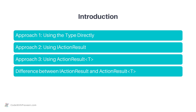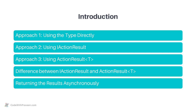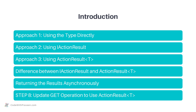We then cover the differences between the usage of IActionResult and ActionResult. Then we move on to understanding how to return the results asynchronously using the async-await mechanism. Finally, as a next step in building the web API, you will update the existing GET operation to use ActionResult. By the end of this section, you will be familiar with the return types of actions in a web API class.